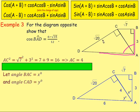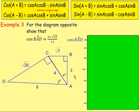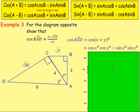So we're splitting BAD into the two angles and we need to work out these missing sides. Cos(BAD) = cos(x + y). Using the addition formula, cos(x + y) = cos x·cos y − sin x·sin y. Replace a and b with x and y in the formula.